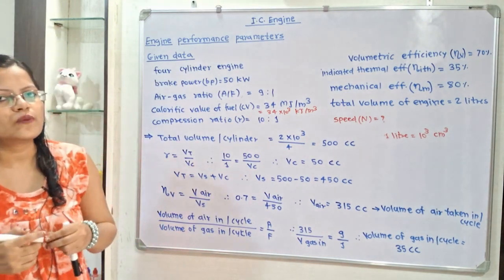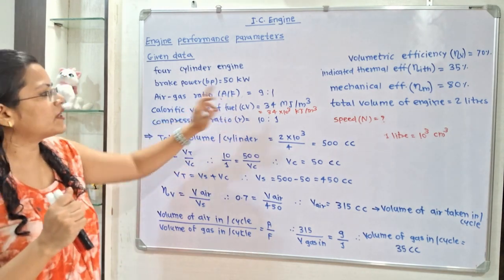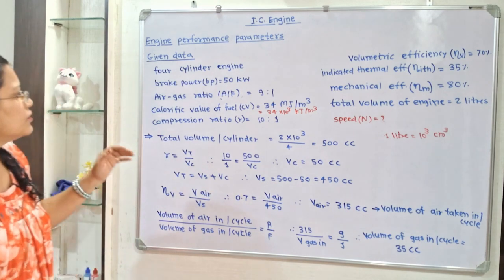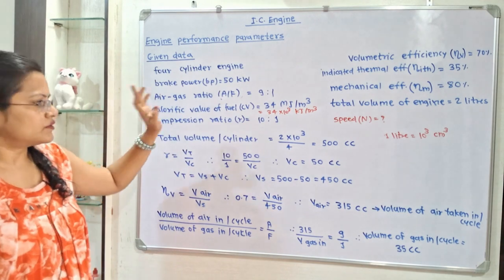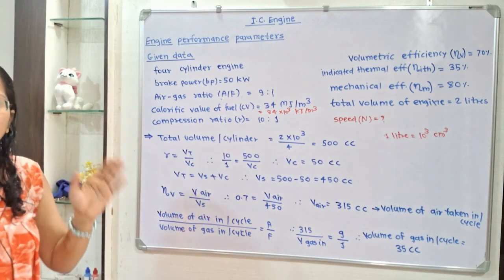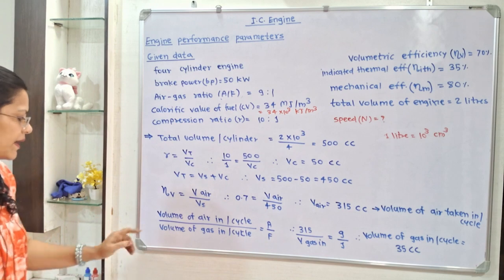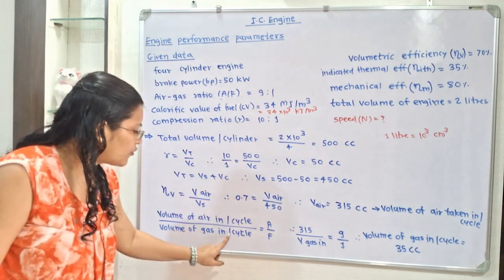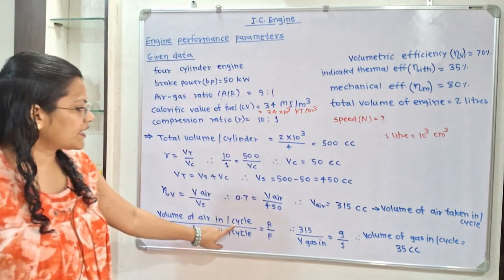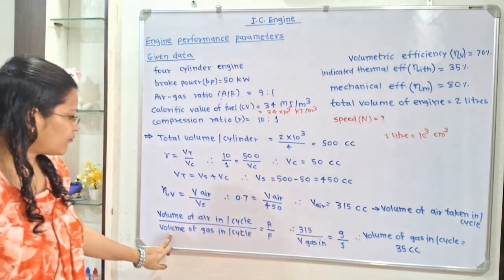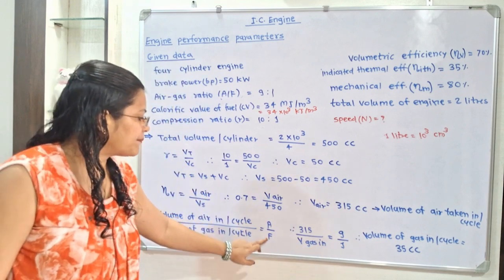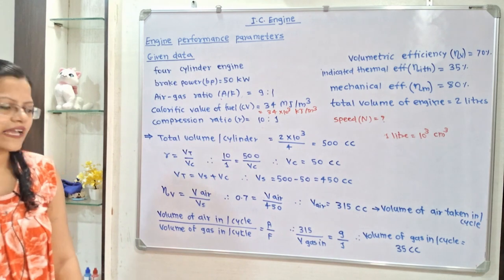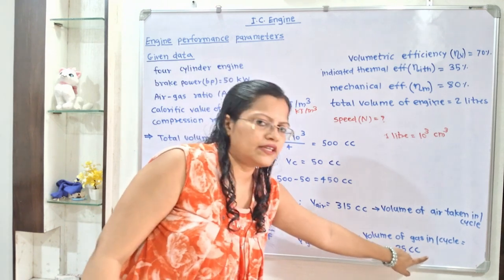To calculate the volume of gas taken in per cycle, we use the air-to-fuel ratio. Since fuel is gas, A/F = volume of air taken in per cycle ÷ volume of gas taken in per cycle. So, 350 / V_gas = 9/1, giving volume of gas taken in per cycle = 350 / 9 ≈ 35 cc... wait — using 315 / 9 = 35 cc per cycle.